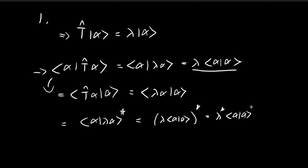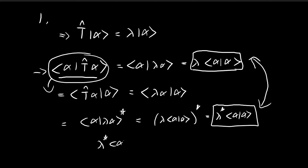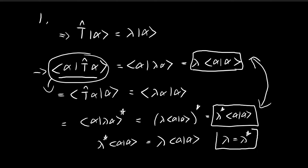We started with one expression and arrived at two conclusions: lambda times the inner product of alpha with itself, and lambda-conjugate times the inner product of alpha with itself. So these two expressions must be equal, which implies lambda equals its conjugate. Therefore lambda must be real — it cannot have any imaginary components, otherwise it would not equal its conjugate. This is how we prove our first claim: the eigenvalues of a Hermitian operator are always real.